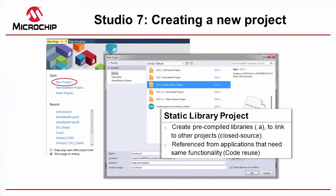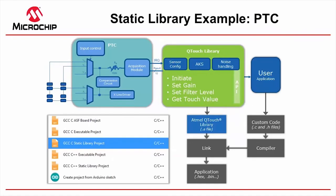A static library lets you create pre-compiled libraries to link to other projects. This tends to be used for shared functionality or to share core company IP across various products. For example, Atmel uses a static library for our peripheral touch controller — one of the more unique peripherals for touch applications with buttons, sliders, and wheels. The touch library, which configures sensors, adjacent key suppression, noise handling, gain and filter levels, gets compiled as a static library project as a .a file and then linked into the project.